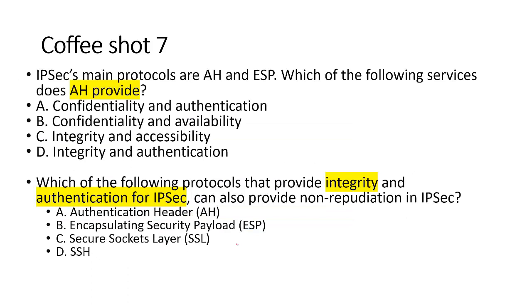Coffee shot seven: IPSec's main protocols are AH and ESP. Which of the following services does AH provide? Confidentiality and authentication — AH doesn't provide confidentiality, so that's removed. Confidentiality and availability — AH doesn't deal with availability either. Integrity and accessibility — that's access control. What's left is D: integrity and authentication. AH offers integrity and authentication, by which we can identify the sender.